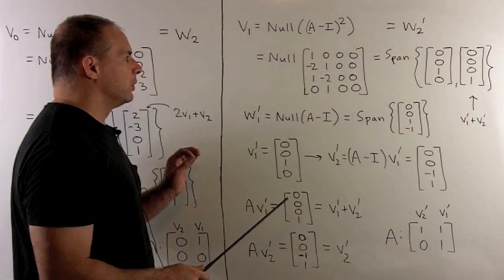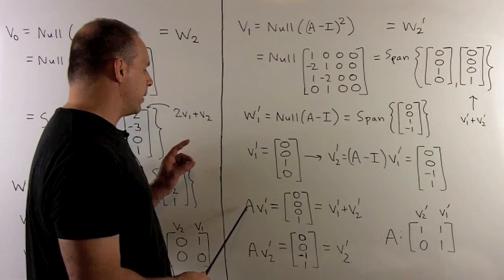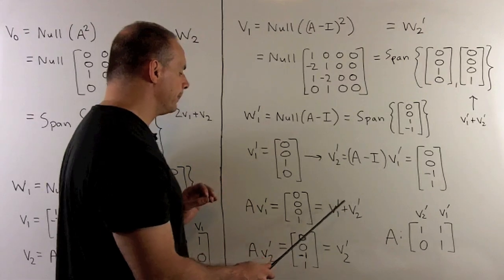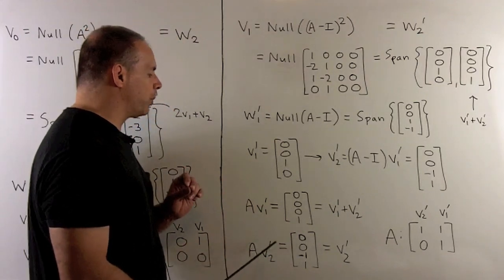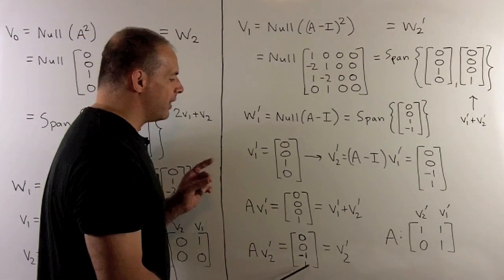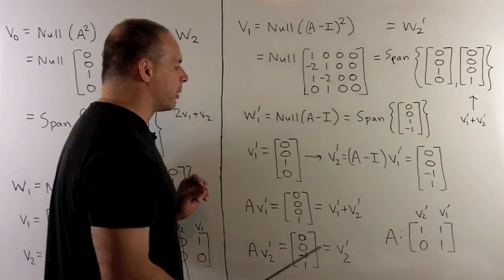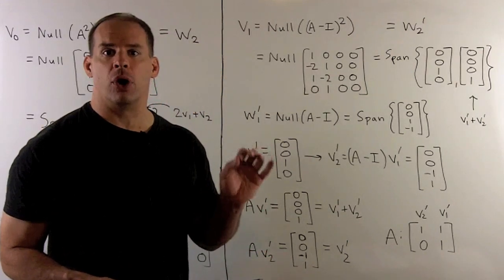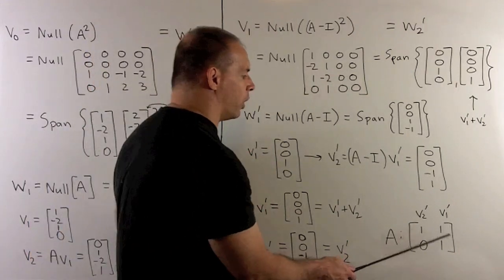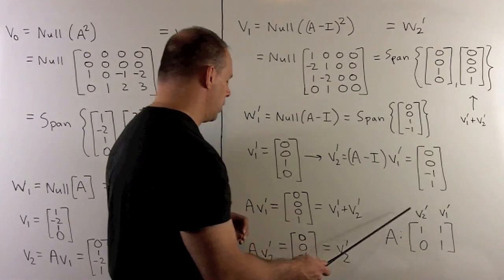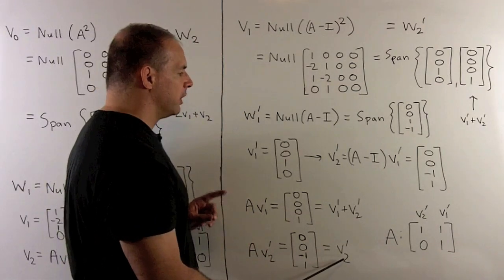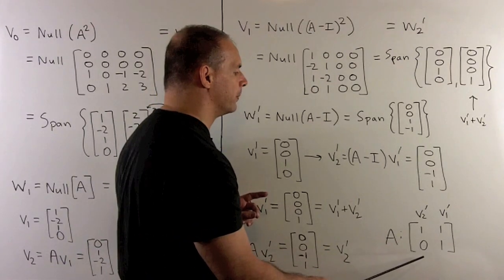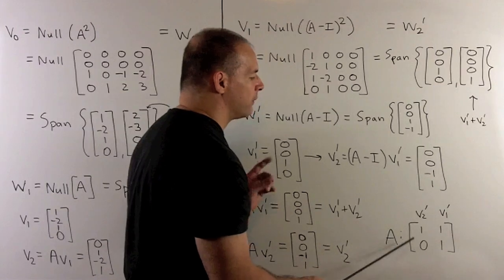To see what the Jordan block looks like: applying A to V1 prime gives (0,0,0,1), which equals V1 prime plus V2 prime. Applying A to V2 prime gives (0, 0, -1, 1), which is V2 prime itself. So when we set up the block matrix for A: V1 prime maps to V1 prime plus V2 prime, giving coefficients 1 and 1. V2 prime maps to V2 prime, giving coefficient 1 for V2 prime and 0 for V1 prime. This gives our Jordan block for eigenvalue 1.